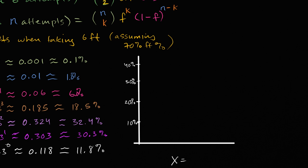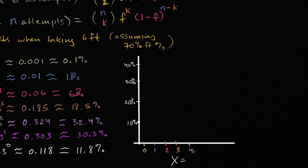In this axis, let's do the different values that the random variable could take on. The random variable taking on the value zero, one, two, three, and then four, five, and finally six. Taking x equals six. And now let's just graph all of these.